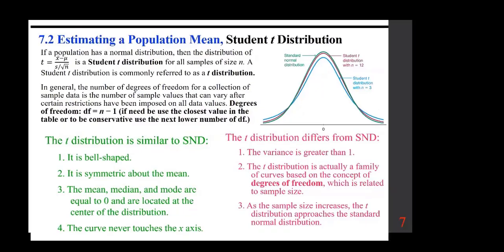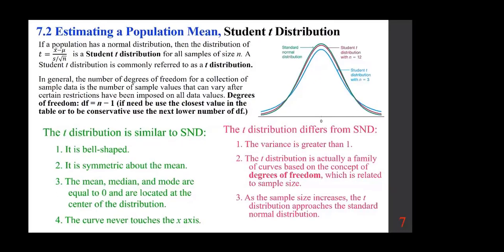In some texts, z is used instead of t when n is larger than 30, because those values are extremely close. However, most modern texts use t throughout. For all practical purposes, the t-distribution becomes the z-distribution if n is large.